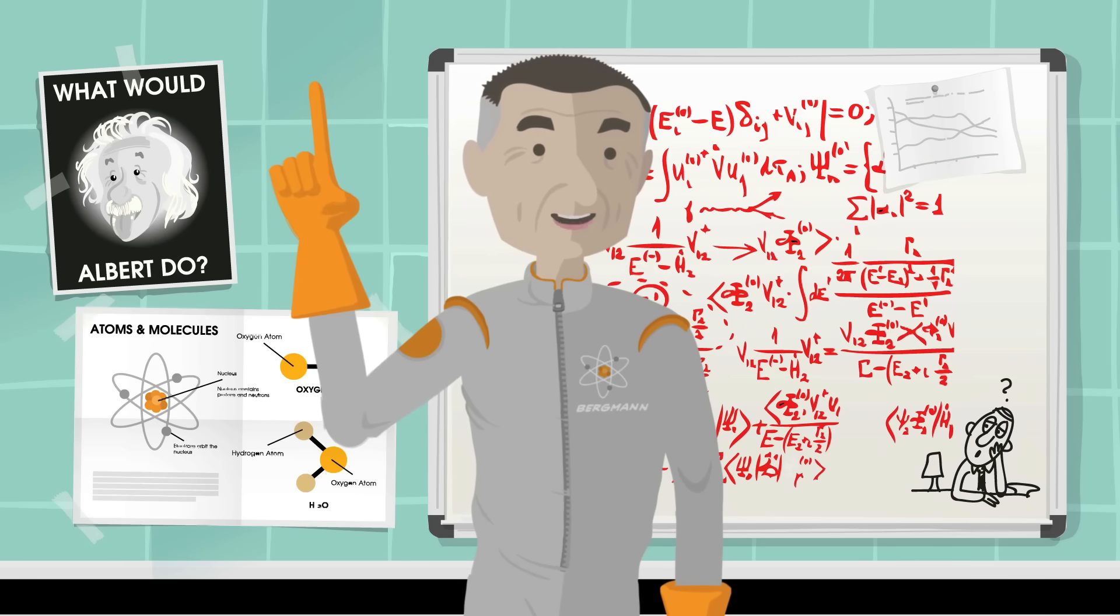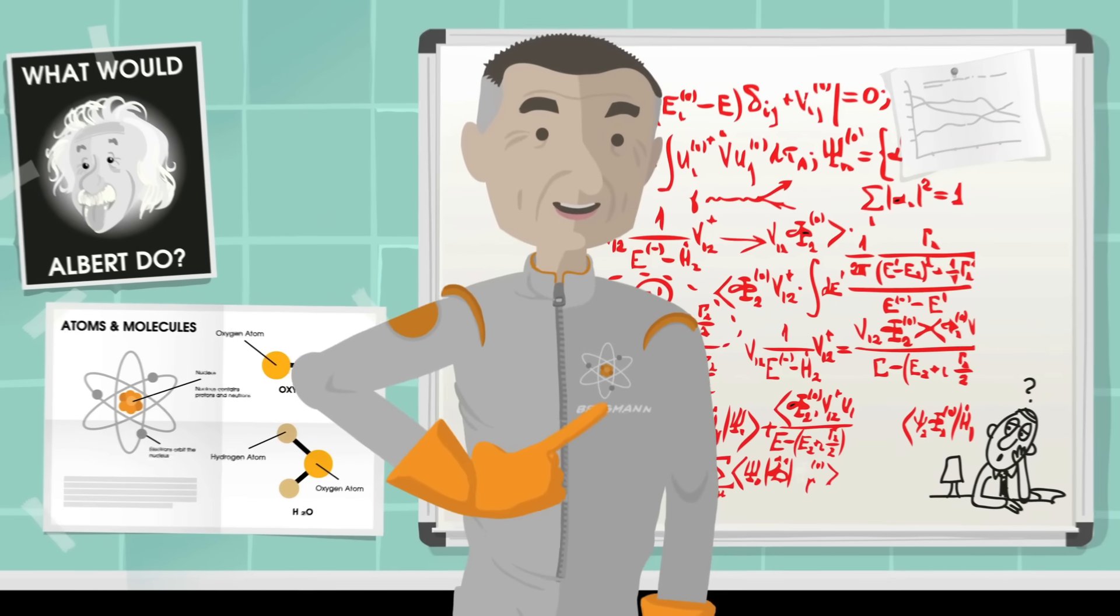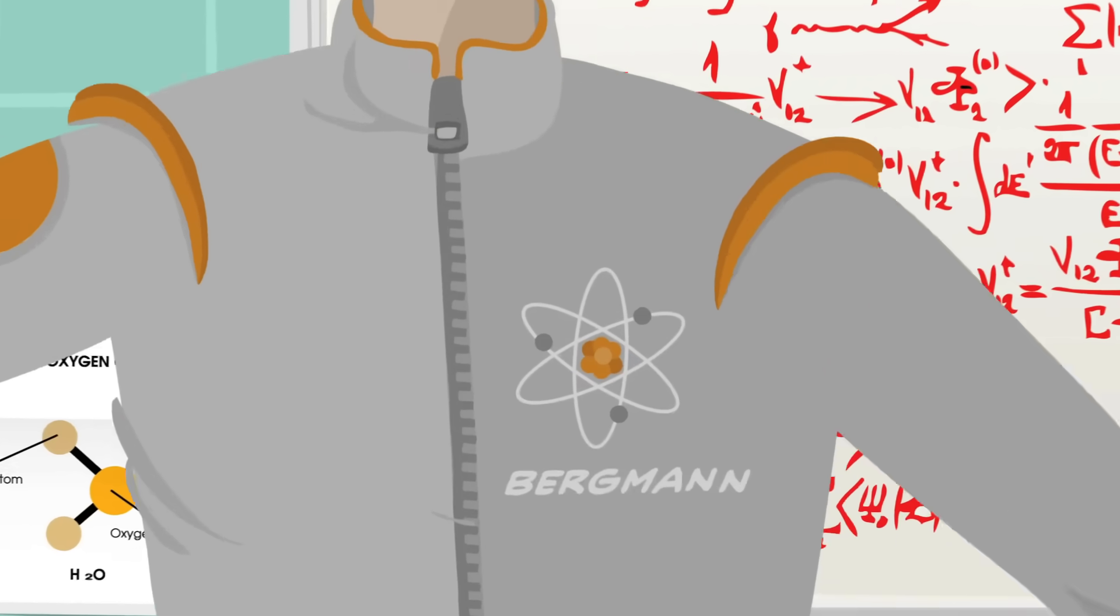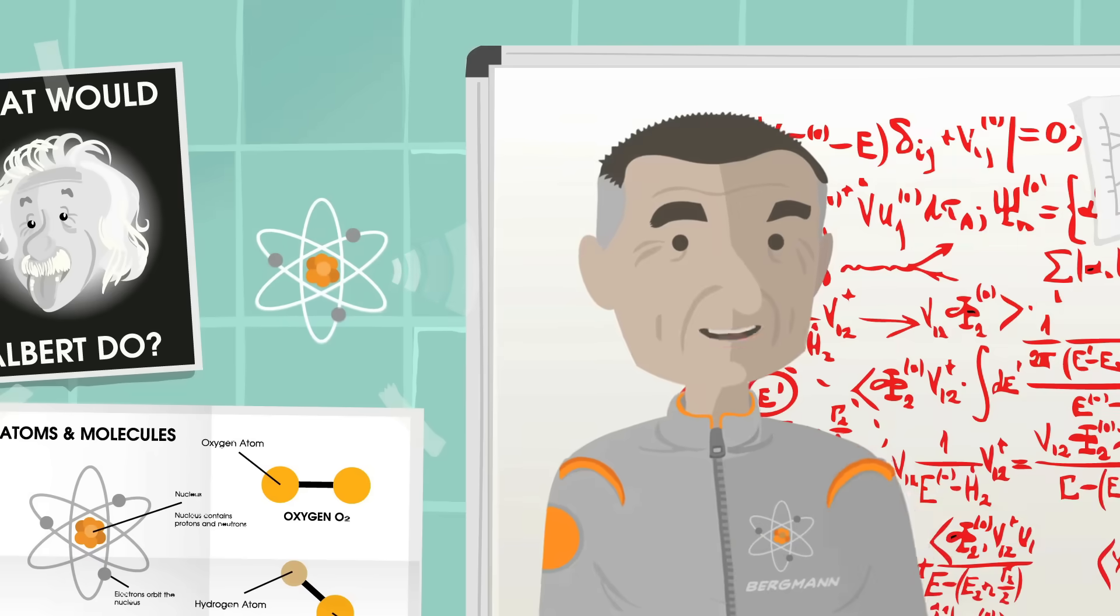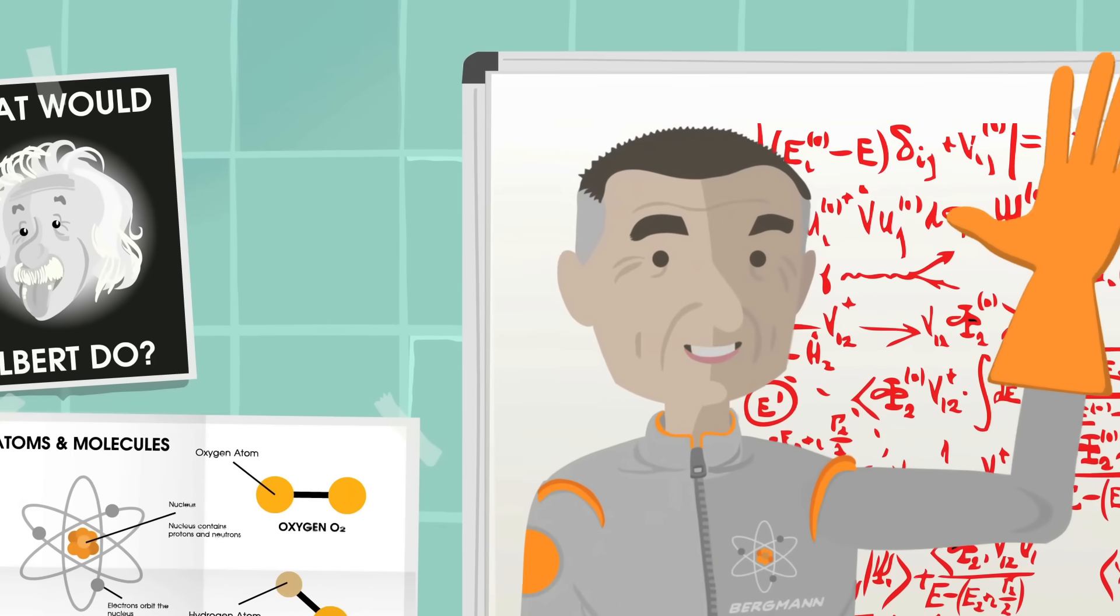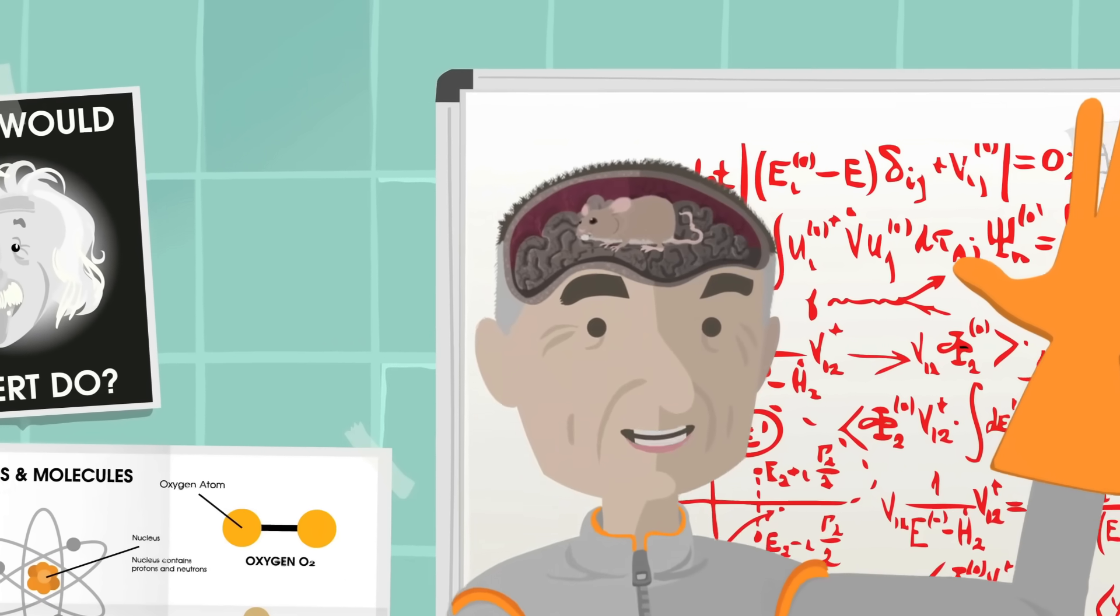You probably already know that everything is made up of little tiny things called atoms. You might even know that each atom is made up of even smaller particles called protons, neutrons, and electrons. And you've probably heard that atoms are small. But I'll bet you haven't ever thought about how small atoms really are.